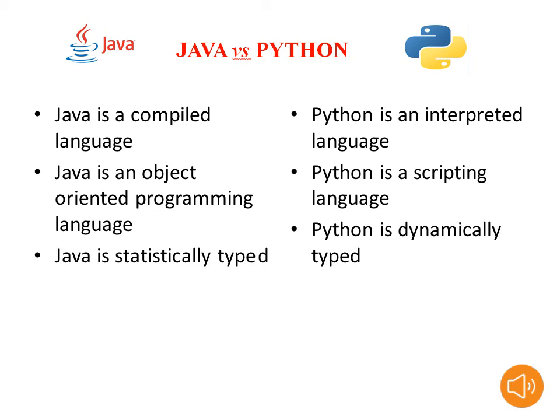Some additional differences: Java is a compiled programming language while Python is an interpreted programming language. Both Java and Python are object-oriented. Python is also a scripting language. Java is statically typed and Python is dynamically typed — this means Java execution is faster than Python. These are the two main advantages of Java compared to Python: static typing for speed, and superior database communication via JDBC/ODBC.